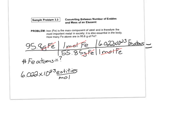divided by my 55.85 equals, and I've got 1.03 times 10 to the 24 iron atoms.